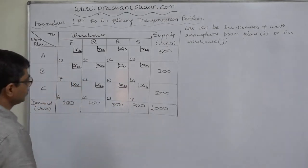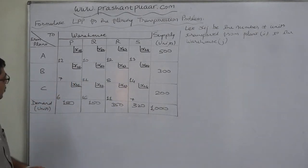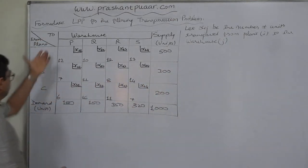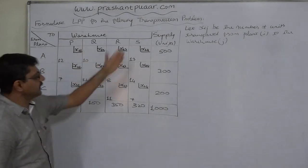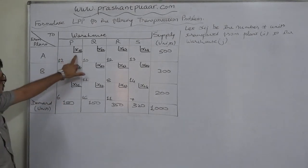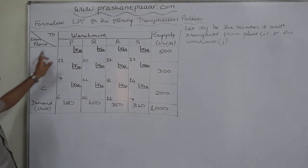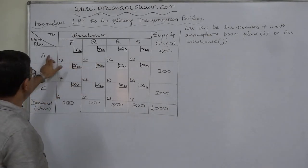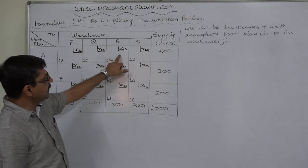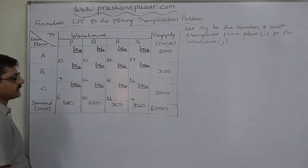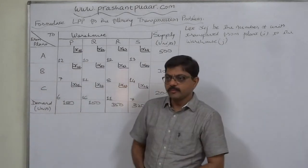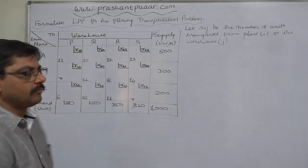To formulate the LPP for a transportation problem, first let us assume the number of units to be transported. Let xij be the number of units transported from plant i to warehouse j. More precisely, x11 units are transported from plant A to warehouse P, x12 units from plant A to warehouse Q, x13 units from plant A to warehouse R, and so on for all other xij values.